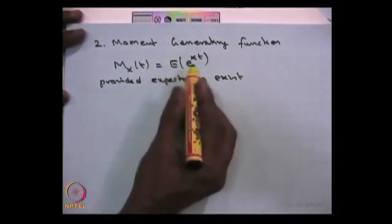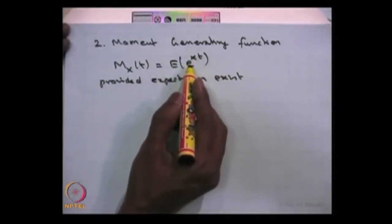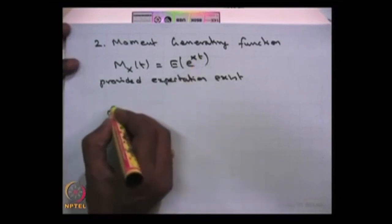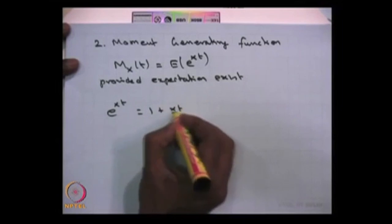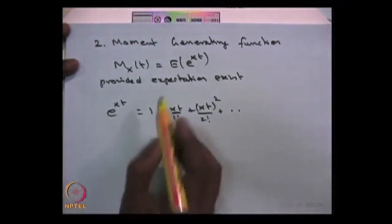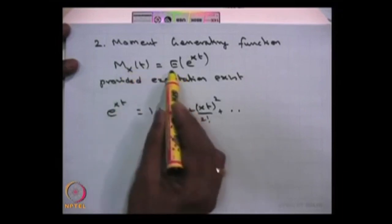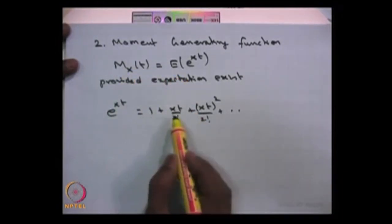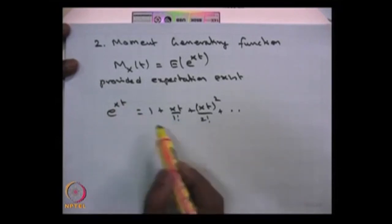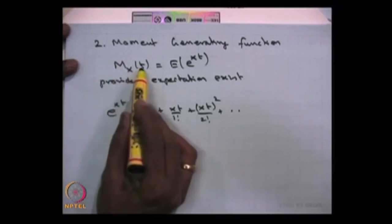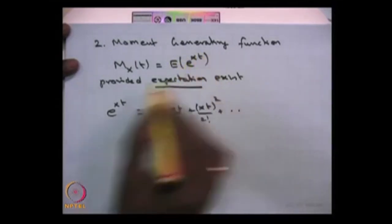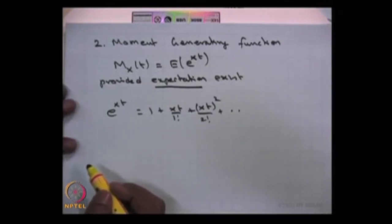Since we are using the expectation of a function of the random variable, and that function is e power xt, you can expand e power xt as 1 plus xt over factorial 1 plus x squared t squared over factorial 2, and so on. Therefore, the moment generating function for the random variable X is the expectation of this expansion — that means expectation of 1 plus the expectation of xt plus the expectation of higher terms, and so on. As long as the moments of all orders exist, you can obtain the moment generating function.